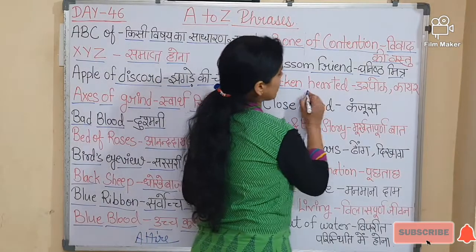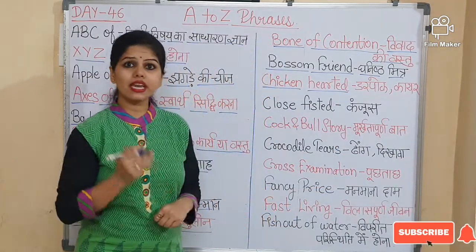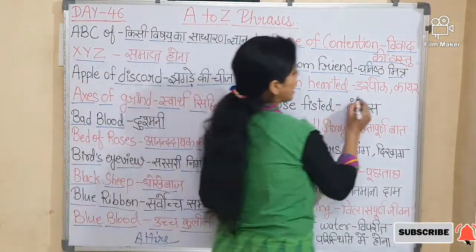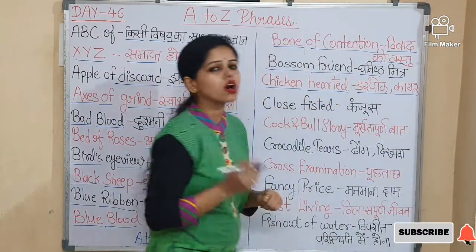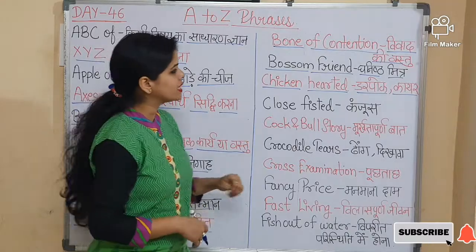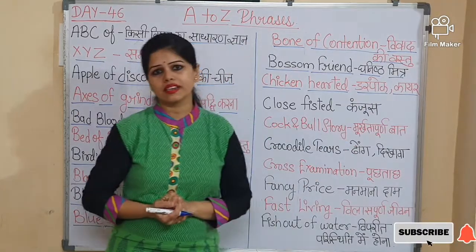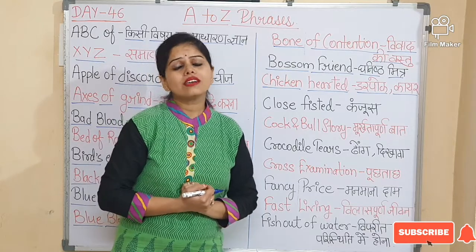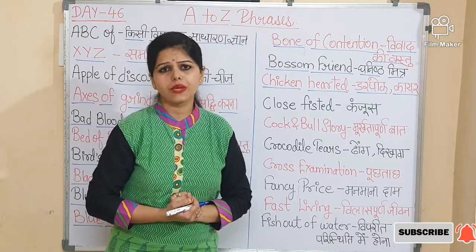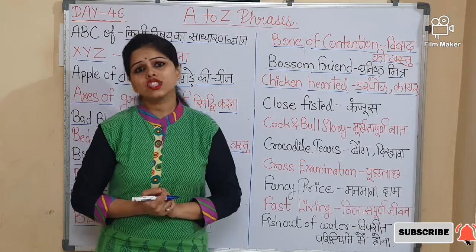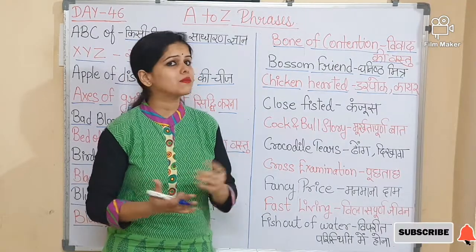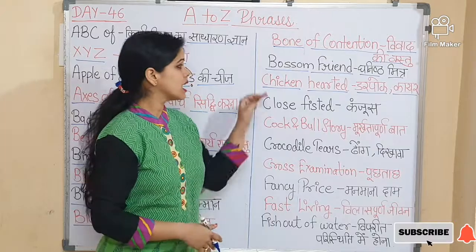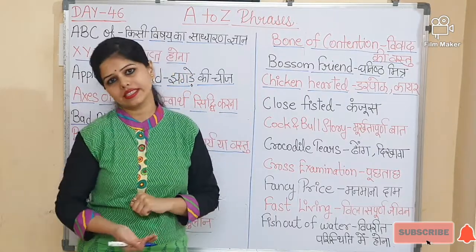Next is 'Chicken hearted'. Chicken hearted means darpok or kaayar — a coward. The sentence is: My husband can't watch horror films alone because he is chicken hearted.